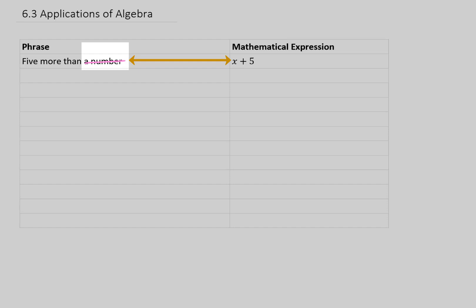Now, no matter what we choose as our x value, this expression x plus 5 gives us 5 more than that number. For example, if we chose that number to be 2, then our phrase would read 5 more than 2. Our mathematical expression would then become 2 plus 5, which would give us 7. And I think we can agree that 5 more than 2 is the same thing as 7.